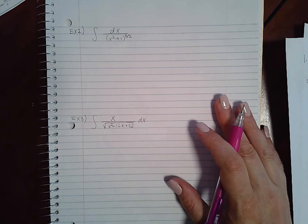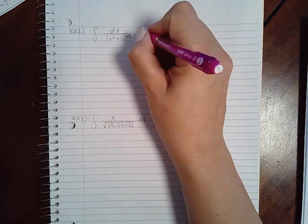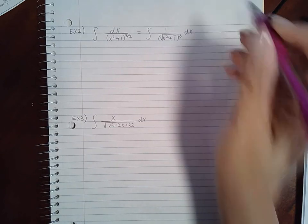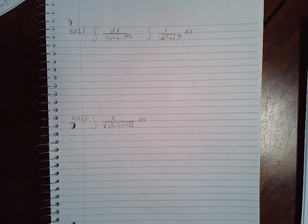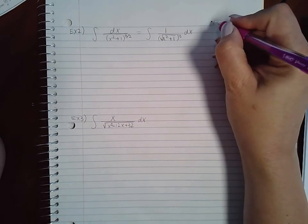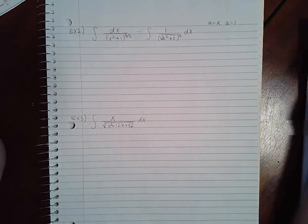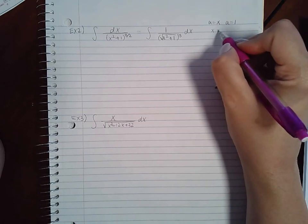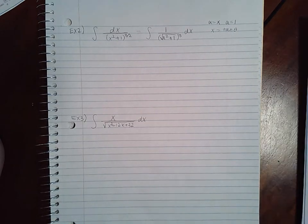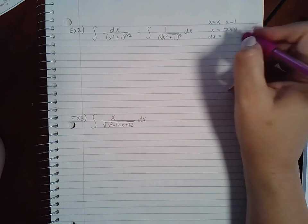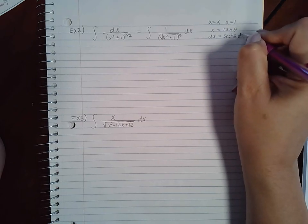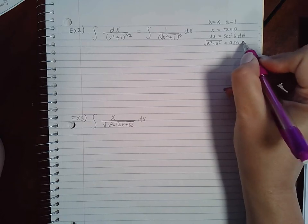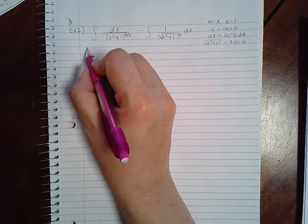This is section 8.4 continued. We have an integral that can be rewritten as the square root of x squared plus 1, cubed, times dx. I notice we have a variable squared plus a value. In this case u is going to be x and a is going to be 1. So I'll use the substitution x equals tangent theta, and dx is going to be secant squared theta d theta. The radical will become a secant theta.